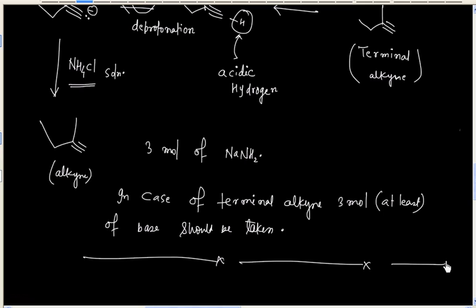In this case, we have used elimination of vicinal dihalide. We can prepare alkyne from alkene. First step is conversion of alkene to vicinal dihalide, and vicinal dihalide can be eliminated by a strong base to give alkyne, and this is a double dehydrohalogenation reaction.